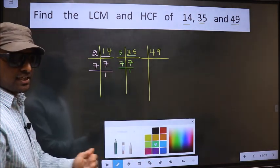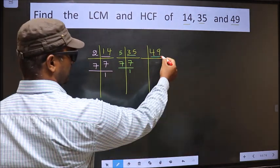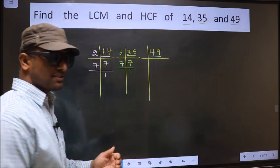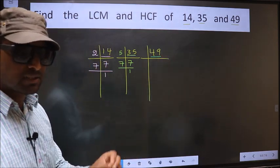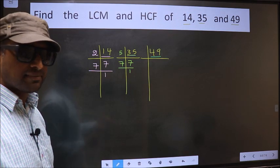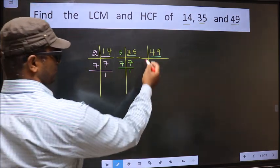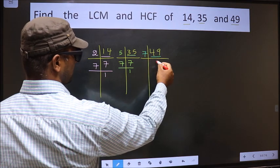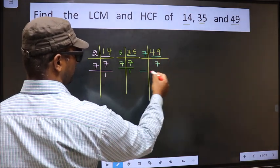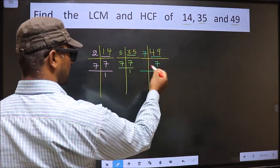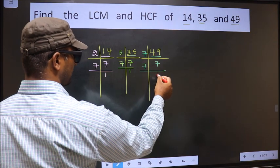Now the other number, 49. Always remember, 7 squared is 49. 7 into 7 is 49. So 7 times 7 is 49. Now we have 7. 7 is a prime number, so 7 times 1 is 7.